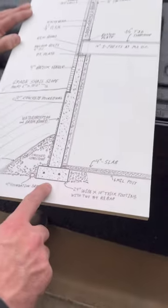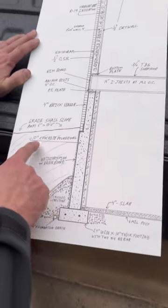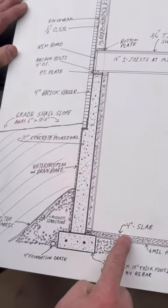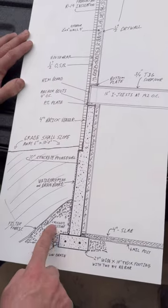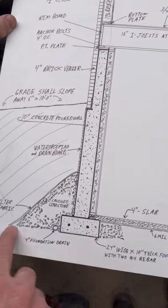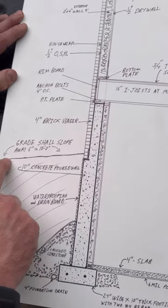Our concrete footings are two foot wide and 10 inches thick. 10 inch poured walls with a brick ledge. A four inch basement slab with six mil poly underneath. Crushed stone with drain tile against the foundation lined with filter fabric. Grade that slopes away from the house.